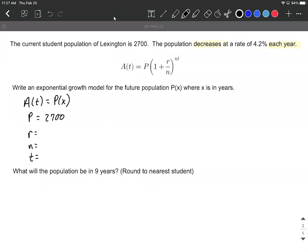Our rate is decreasing at 4.2%, so negative 4.2%. But we do want to rewrite this as a decimal by moving that decimal place over two places. So negative 0.042.